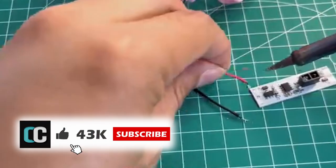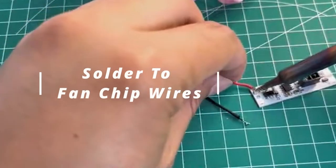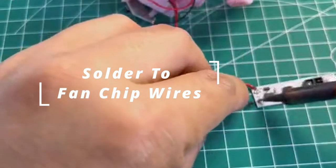Now let's proceed. On the left side, where it indicates in, is where we get the power from, so we solder it to the fan chip's wires.